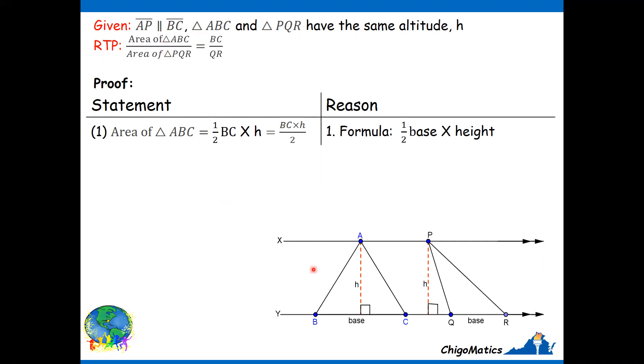So, obviously, the fact that we are talking of areas, then I should start by finding the areas of each triangle, then find the ratio of their areas, and I expect to arrive at this conclusion. So the area of triangle ABC is half BC, which is the base times the height, H.